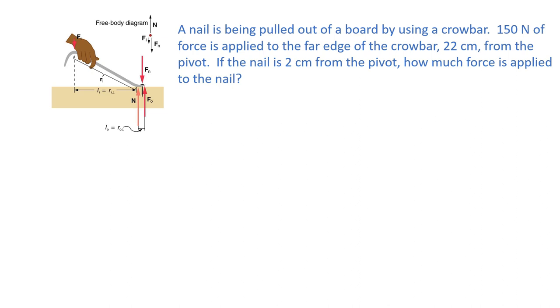In the example of the nail being pulled out with the crowbar, we will first do our list. We have force applied 150 newtons. We have the distance of the lever arm of the applied force which is 22 centimeters, so I will go ahead and make that 0.22 meters so that we have all SI units.